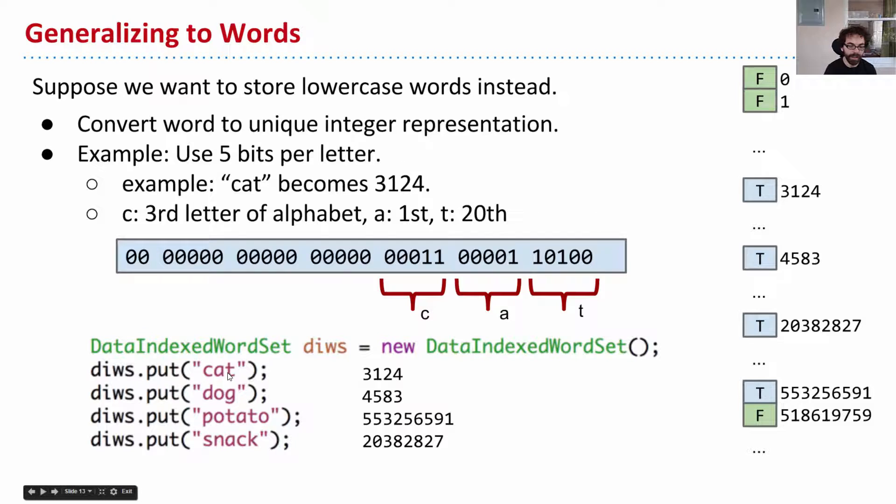And so I could play this trick with the words cat, dog, potato, snack, and I'll get different integers. And so if I'm using a data indexed word set that's based on this principle, then whenever I say put cat, I first compute this number, and then I go to that box and I set it to true. And so in this way, I'm able to store the word cat. And as long as I have code that knows how to turn cat into a number, then I'm in good shape.